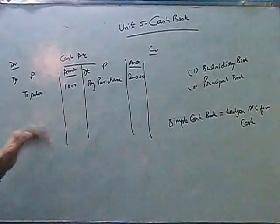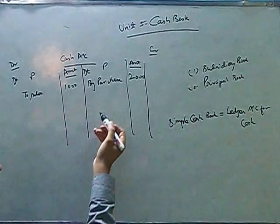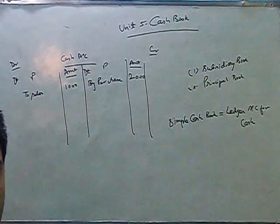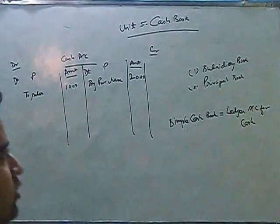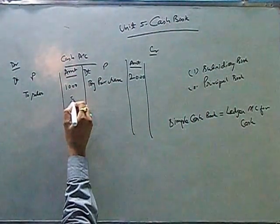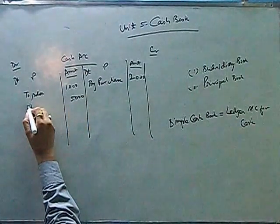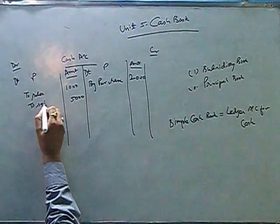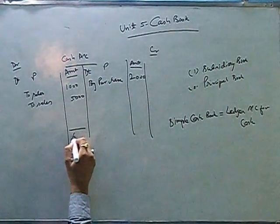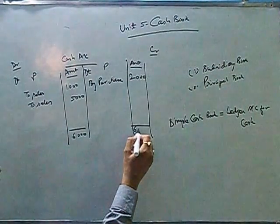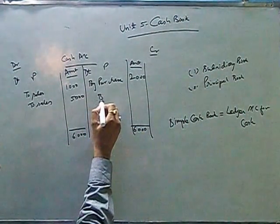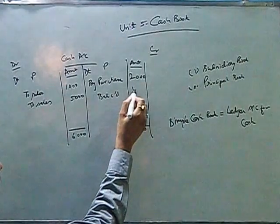Whenever we have to balance, so say cash, normally cash is an asset. So cash will have a positive balance. So the debit side will be more than the credit side. Say there are a few more sales of rupees 5,000. Total being 6,000. And here also total will be 6,000. So balance carried down is 4,000.